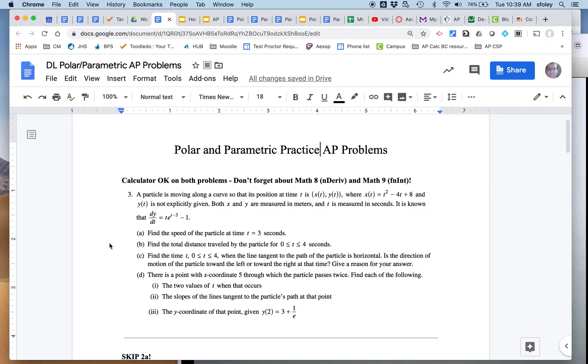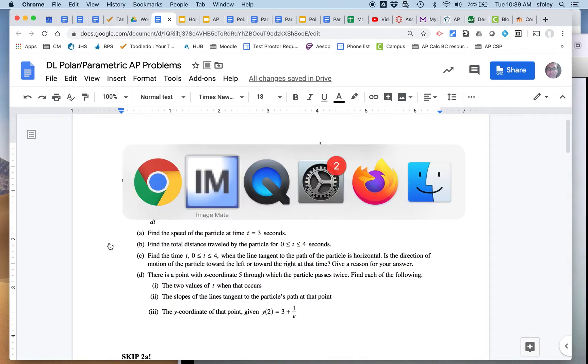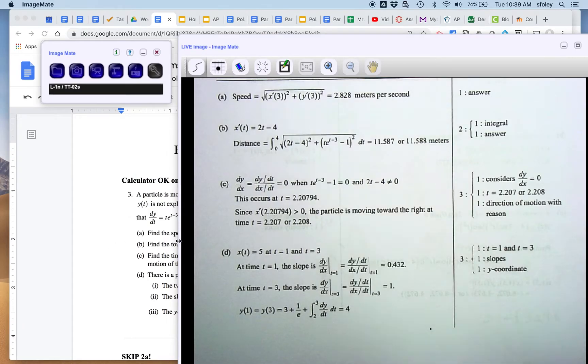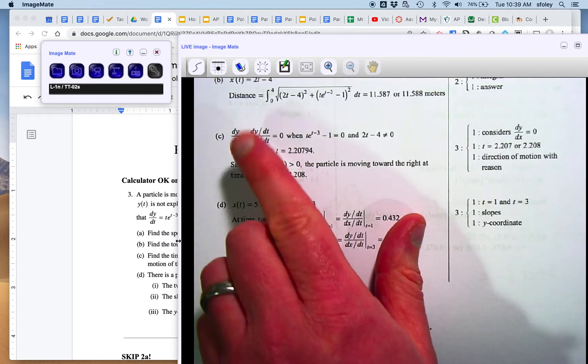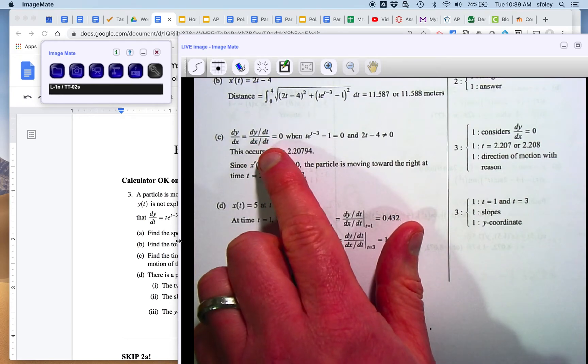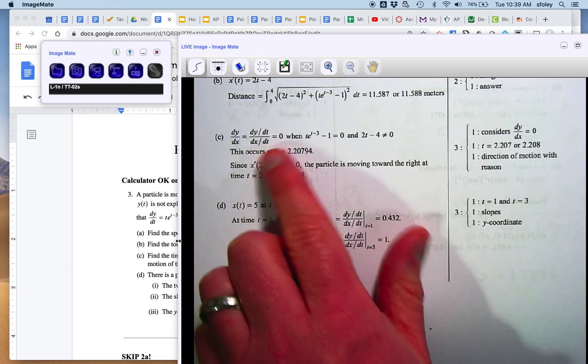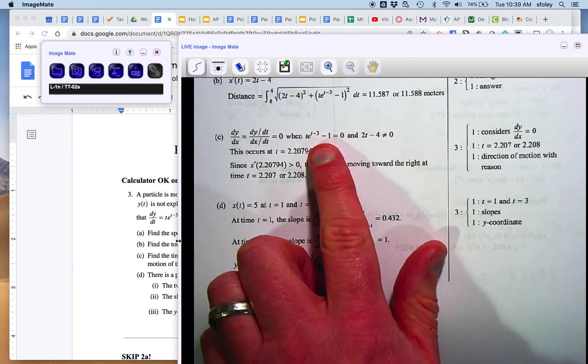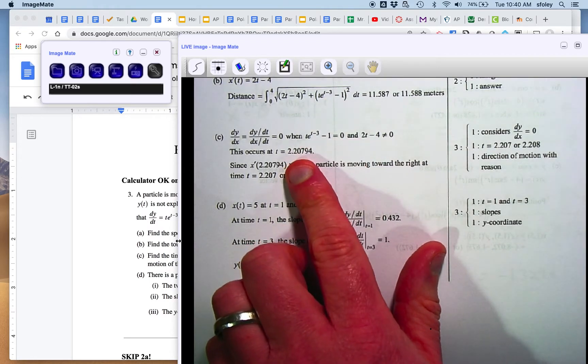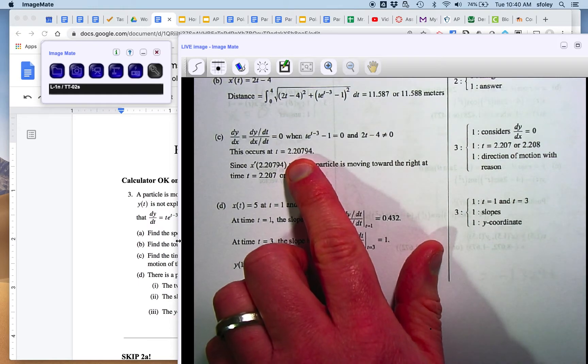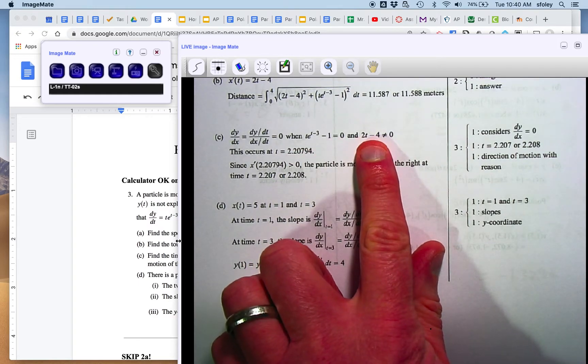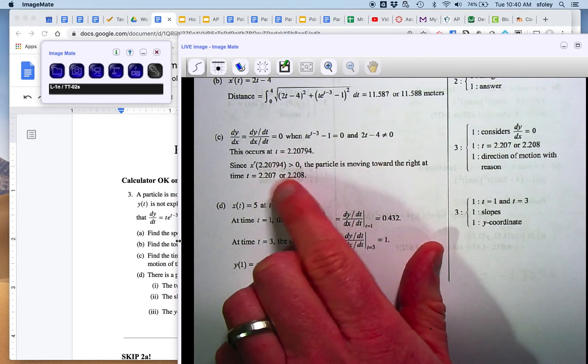For C, it says when is the tangent line horizontal, and is it moving to the left or to the right? And so that's a little bit tricky. Tangent line is horizontal, that will happen when, of course, the derivative is zero, and for a parametric, the derivative is zero as long as the numerator is zero and the denominator is not. And so you take that dy dt, set it equal to zero, you get a t value on your calculator, probably by using the graph, and just make sure that that does not make dx dt zero. And of course it does not.